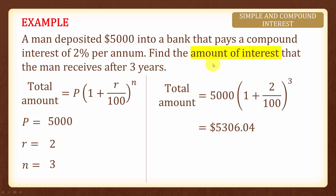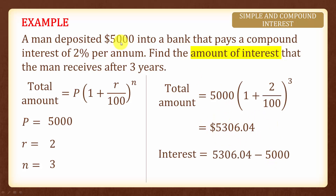If the question asks us to find the amount of interest instead, we take the total amount minus the principal amount, giving us interest equal to three hundred and six dollars and four cents. Take note that this formula for compound interest is used to find the total amount, not the interest itself.